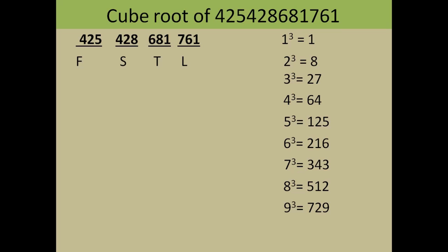The only thing you need to remember are the cubes of the first nine numbers and their corresponding last digits. For example: 1³=1, 2³=8, 8³=512 (last digit 2), and 9³=729 (last digit 9). You have to remember the cubes and their corresponding last digits.